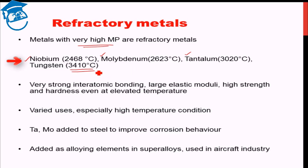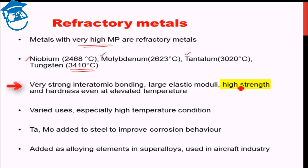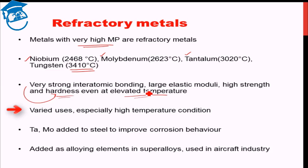These metals have special applications under high temperature conditions. Their very high melting point is due to very strong interatomic bonding. In addition, refractory metals have large elastic moduli, high strength, and very high hardness — a manifestation of the strong interatomic bonding. These properties remain good even at elevated temperature, making them very appropriate for high-temperature use.